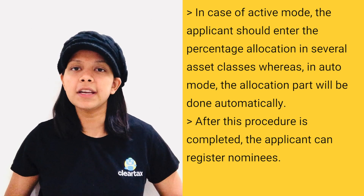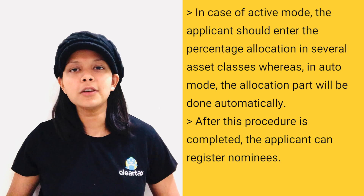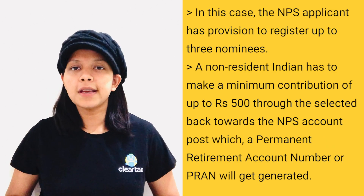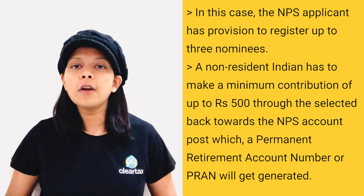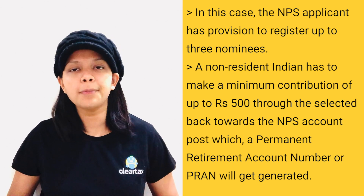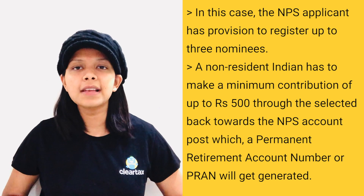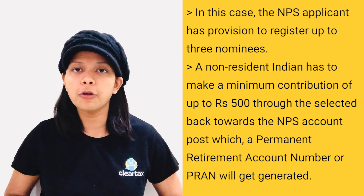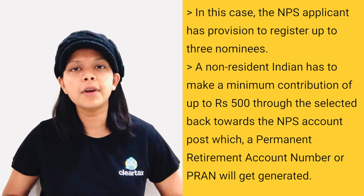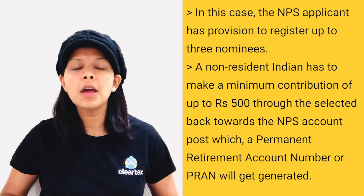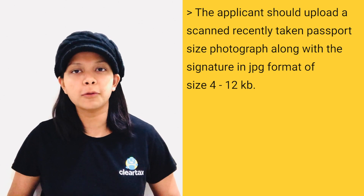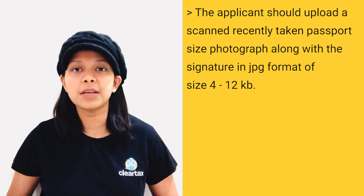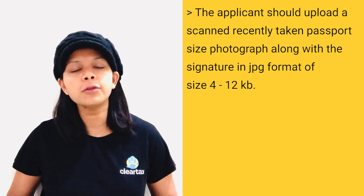After this procedure is completed, the applicant can register nominees. The NPS applicant has the provision to register up to three nominees. The NRI has to make a minimum contribution of Rs 500 through the selected bank towards the NPS account, after which a Permanent Retirement Account Number or PRAN will be generated. The applicant should upload a recently taken passport-size photograph along with a signature in JPG format, sized between 4 to 12 KB.